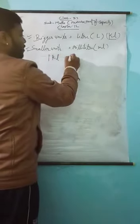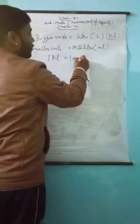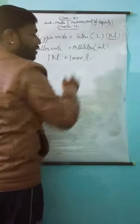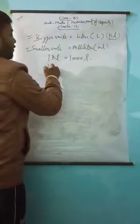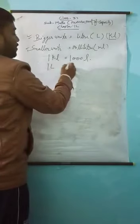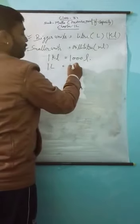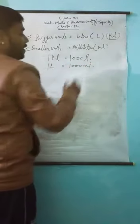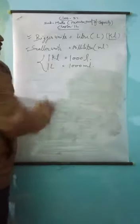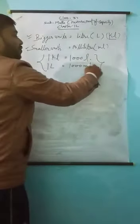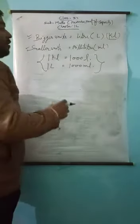One kilo liter is equal to one thousand liters, and one liter is equal to one thousand milliliters. There are two types of things: one kilo liter is equal to one thousand liters, and one liter is equal to one thousand milliliters.